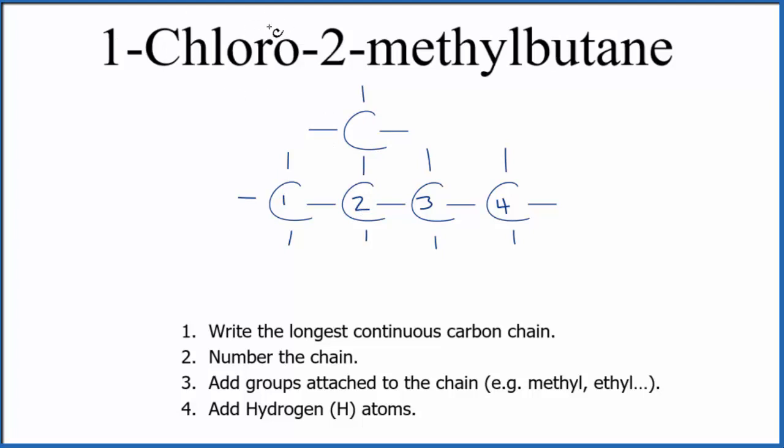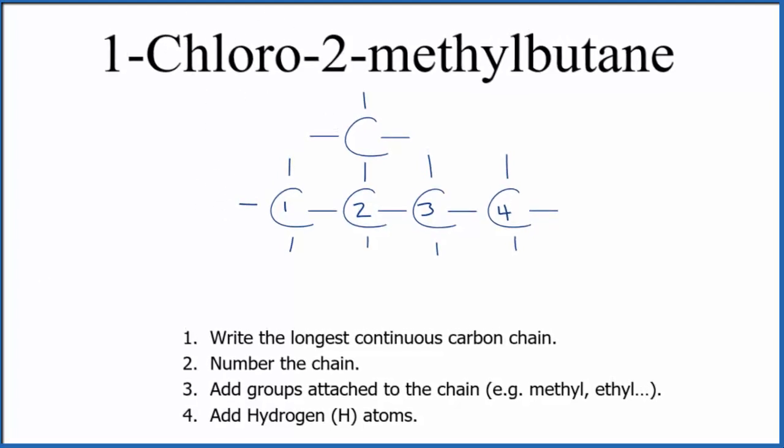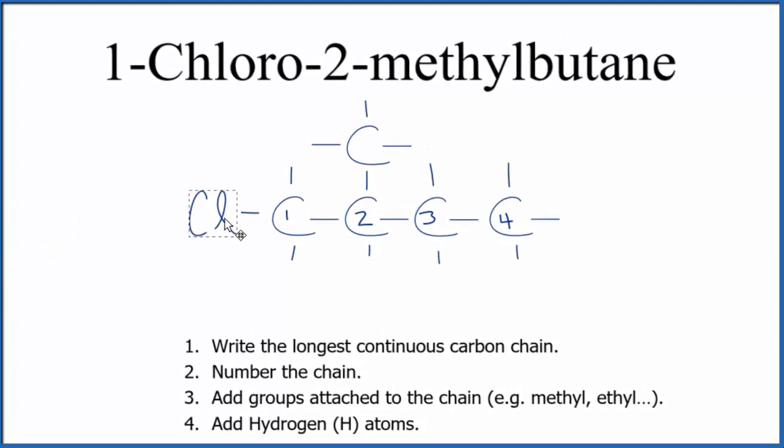On the first carbon, we'll put the chloro group. That's just a chlorine. I think I'll put it right here on the end. And that makes this the structure for 1-chloro-2-methylbutane.